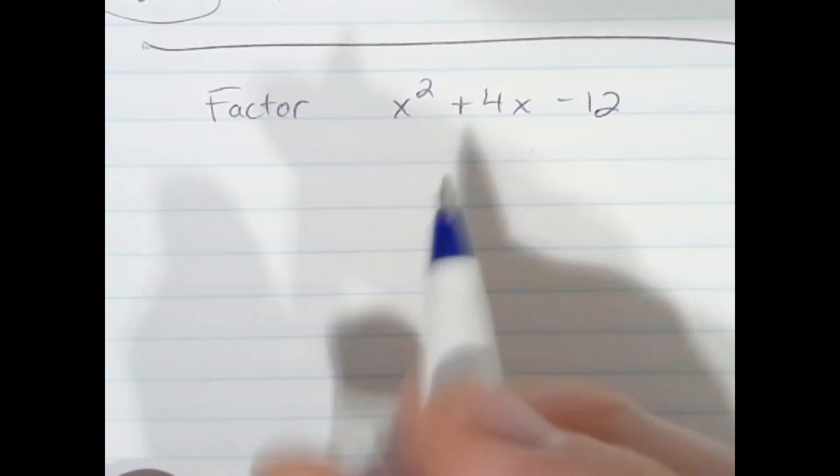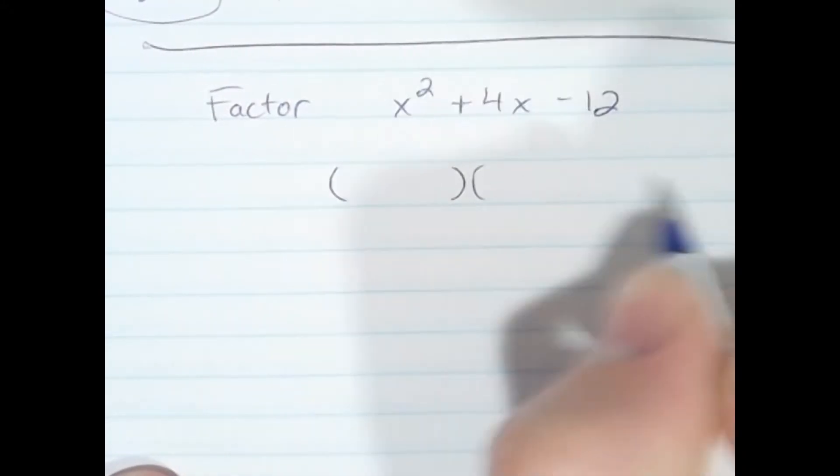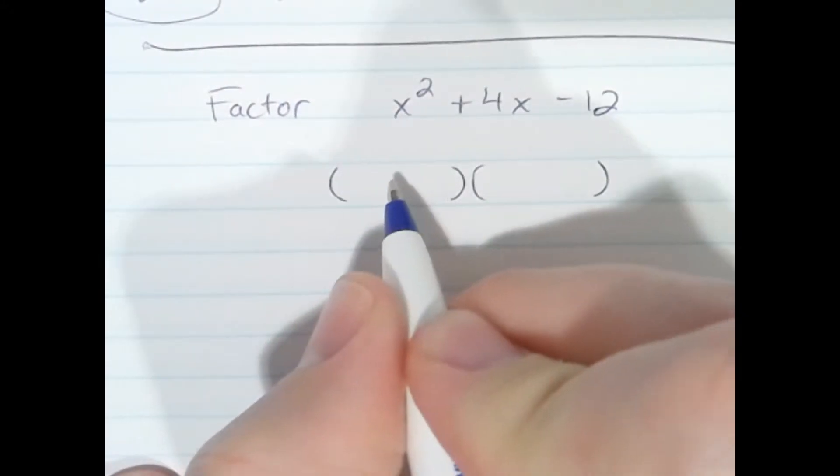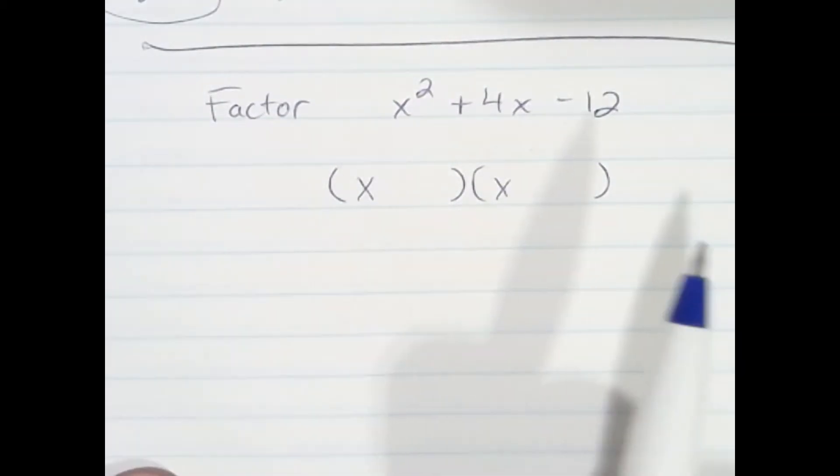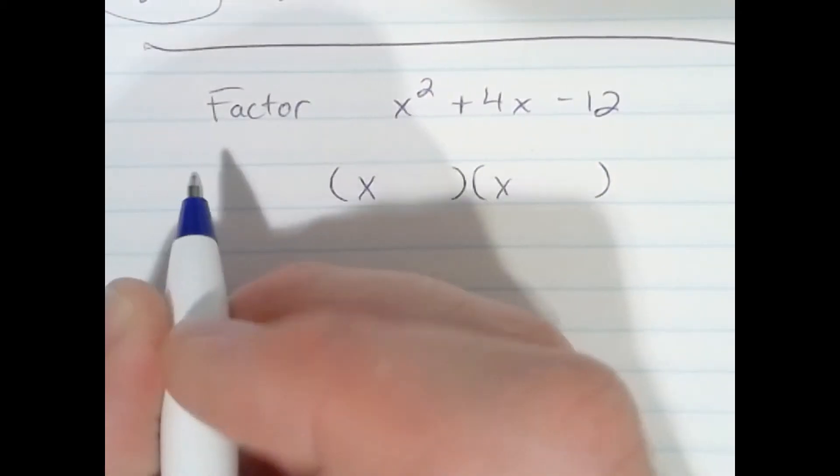So we will set up our answer with the two binomials, x and x. And the question we ask ourselves, what factors of negative 12 add up to positive 4? Off to the side, I will list those.